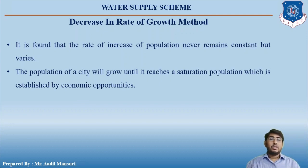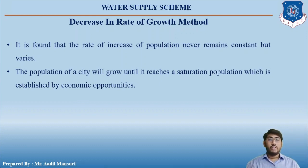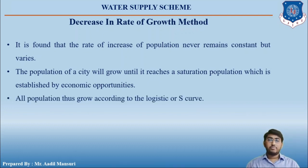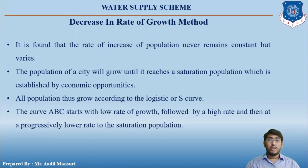There are people in the countryside who will migrate into the city in search of economic opportunities. As long as economic opportunities are present, people will migrate to the cities. If economic opportunities stop or reduce, there will be no increase in population. All population grows according to the logistic or S-curve — curve ABC — starting with a low rate of growth, followed by a high rate, then at a progressively lower rate to the saturation population.